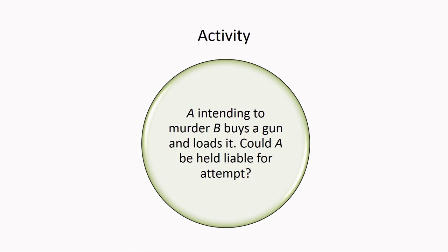Now on to the activity session. A, intending to murder B, buys a gun and loads it. Could A be held liable for attempt? Here we are to apply the three tests: the Proximity Rule, the Doctrine of Locus Poenitentiae, and the Equivocality Test.